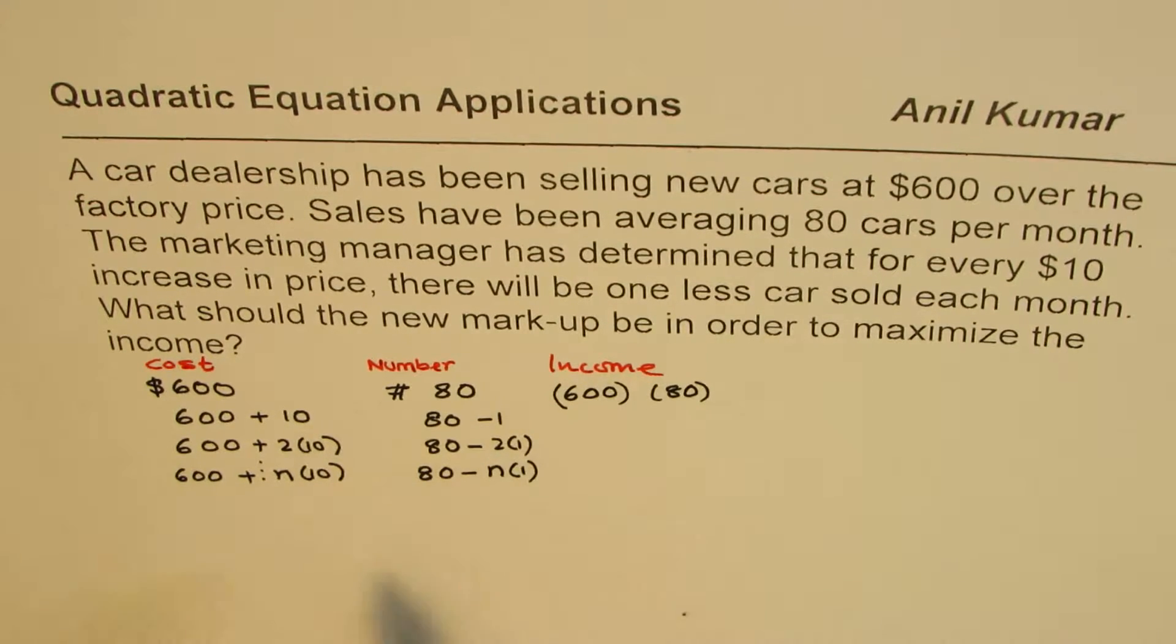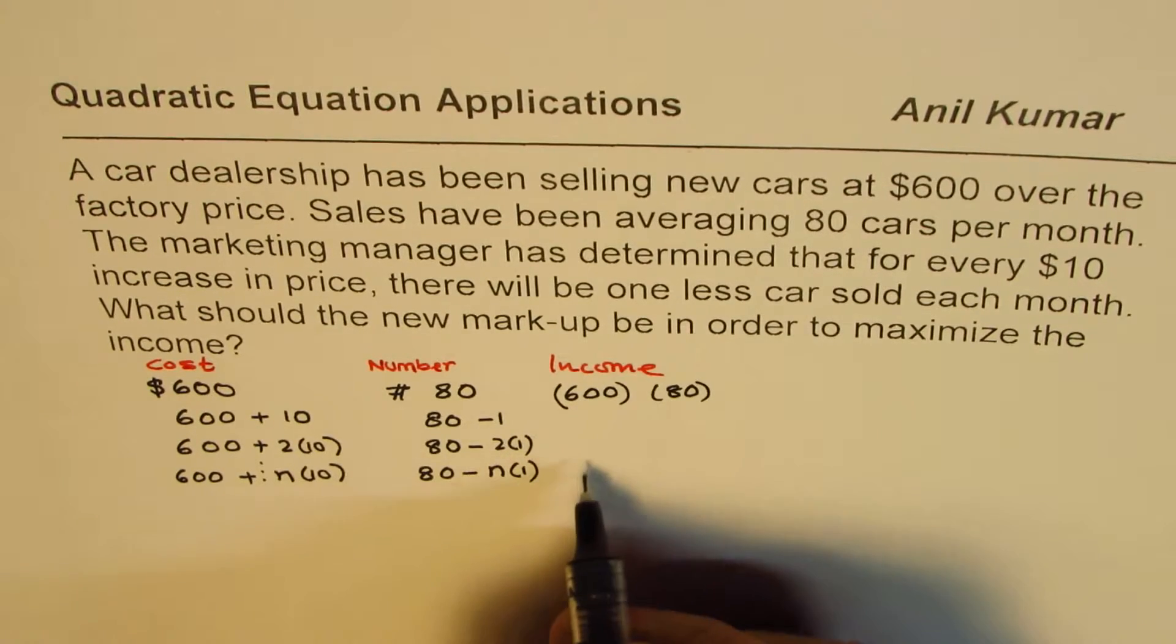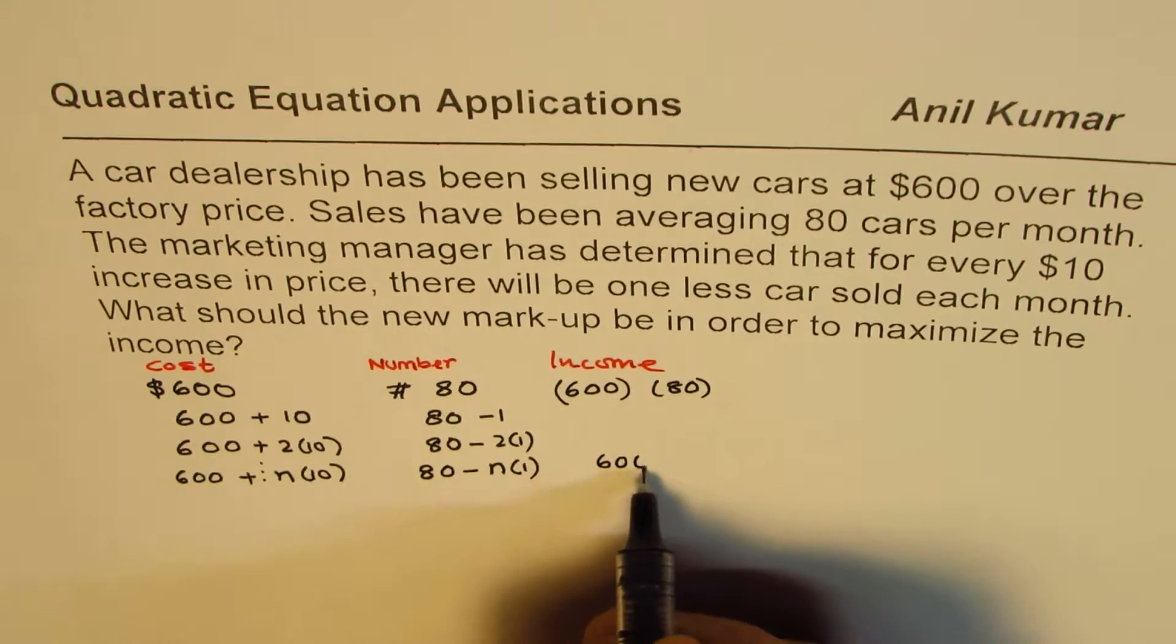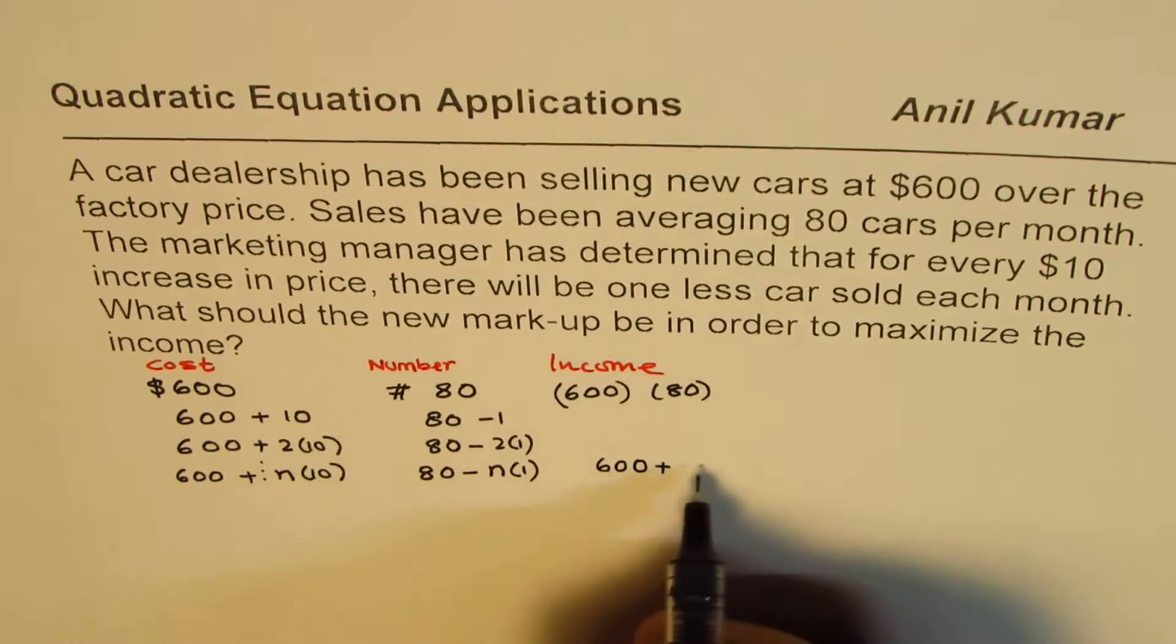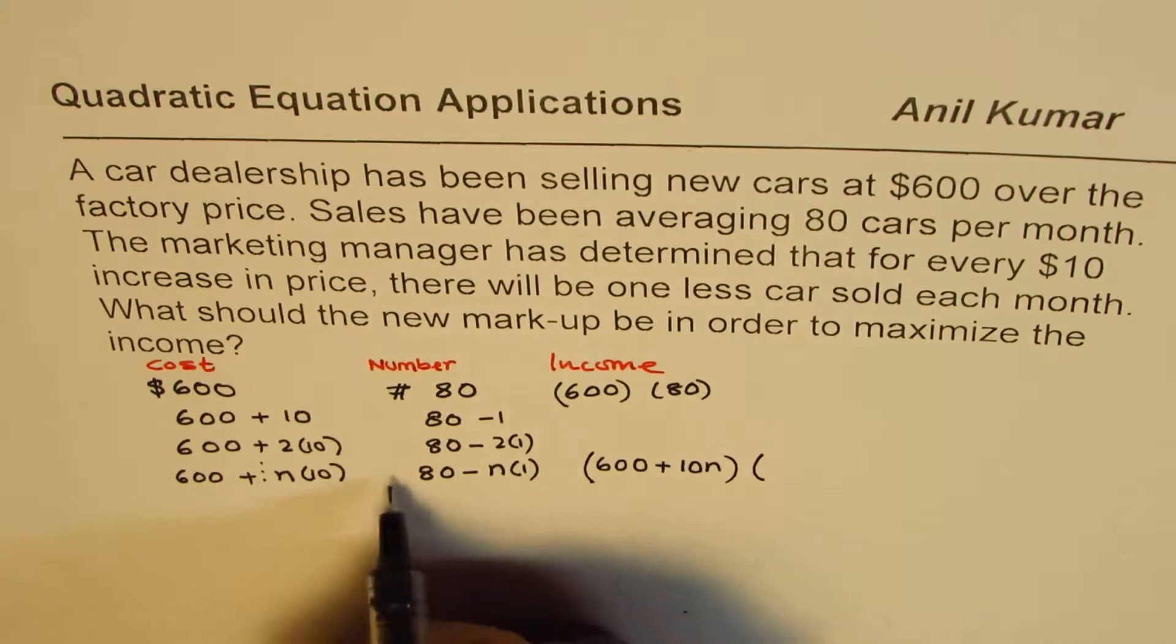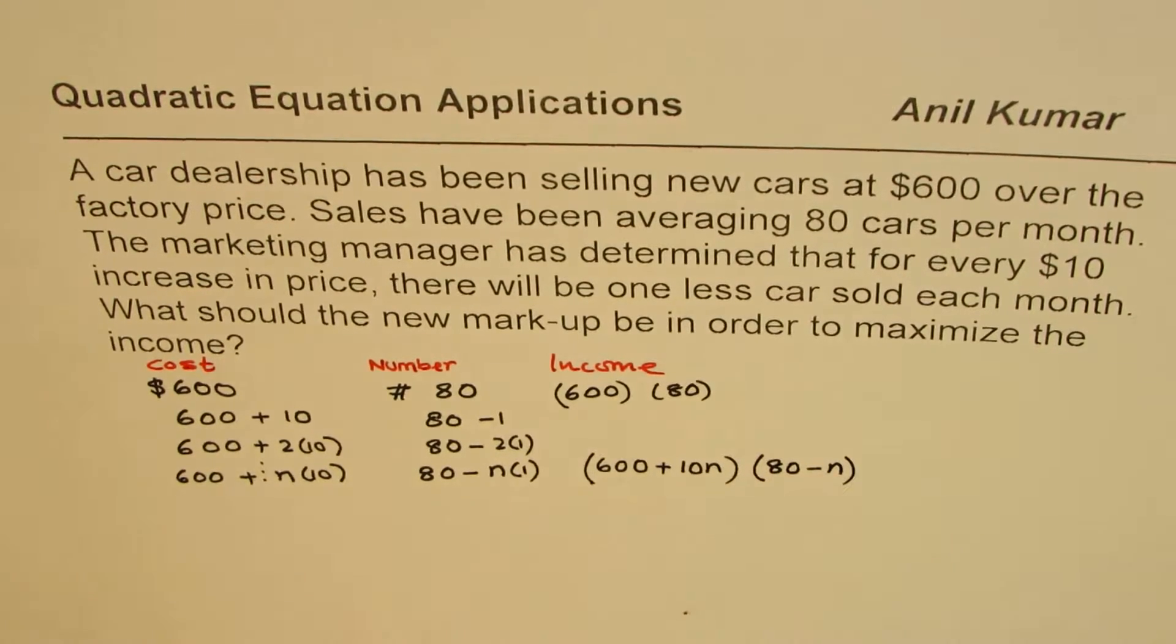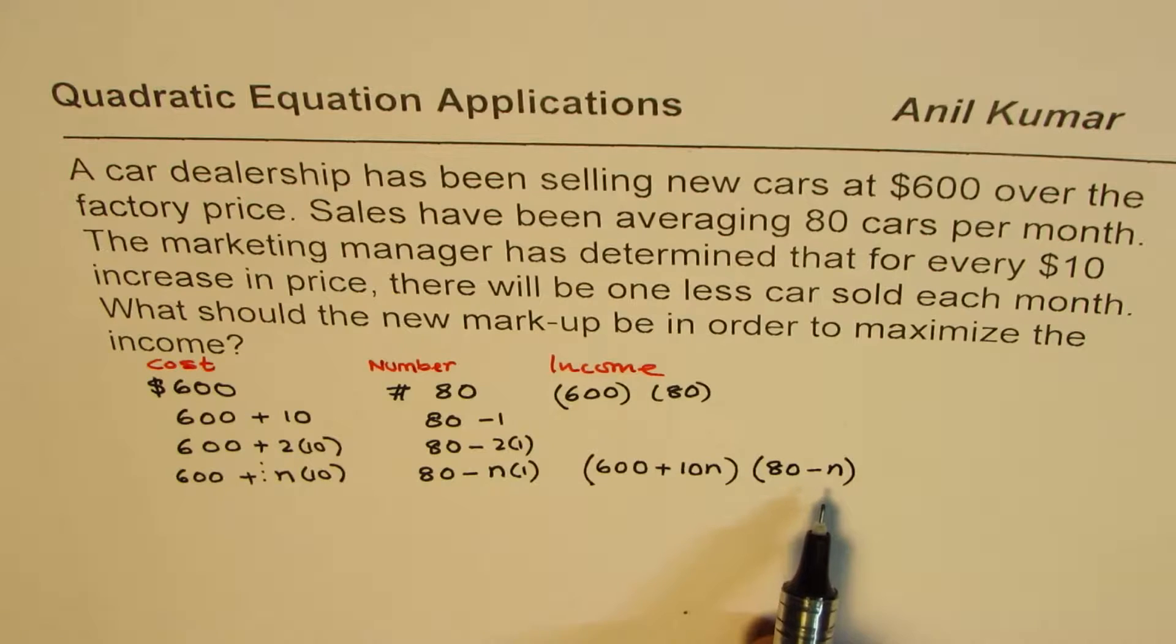Now if that is the case, what is the income? Income is product of these two. So the income will be (600 + 10n) times (80 - n). So that becomes the income.